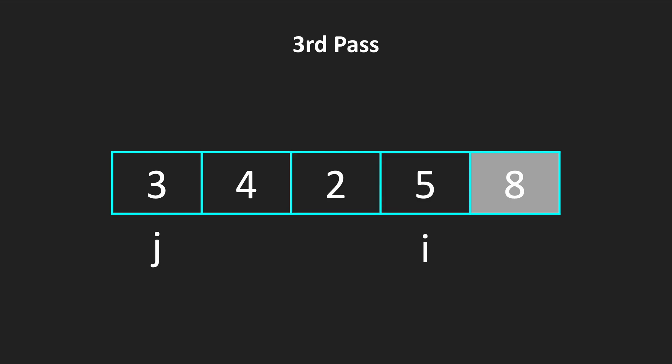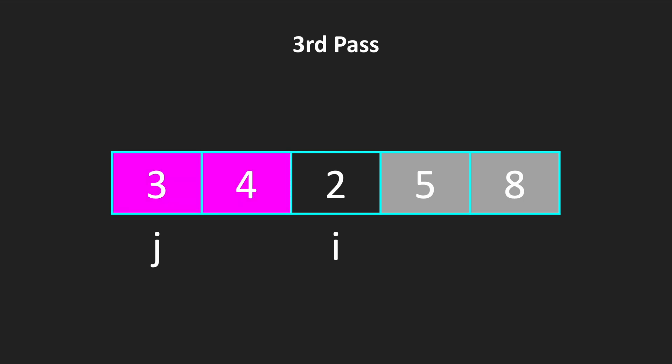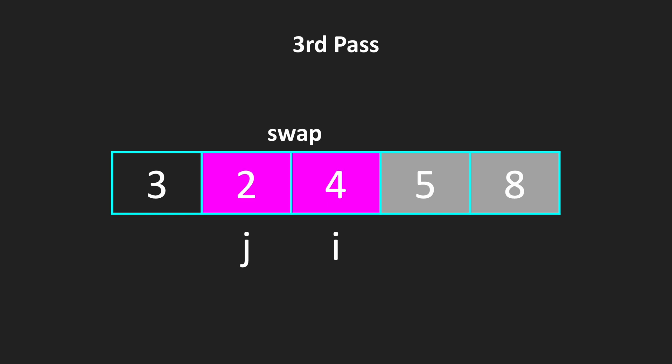So we are starting over again. Our rightmost element is sorted, so we are moving our i. And again, we are starting over. So we are comparing 3 and 4. They are in right order, so we are moving our j. We are comparing 4 and 2. 4 is more than 2. We are swapping these two elements, and we are finalizing our third pass.